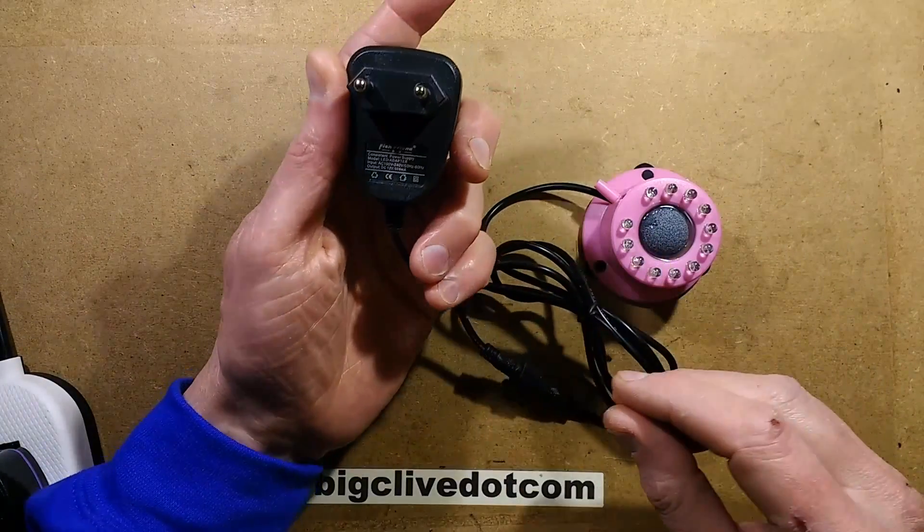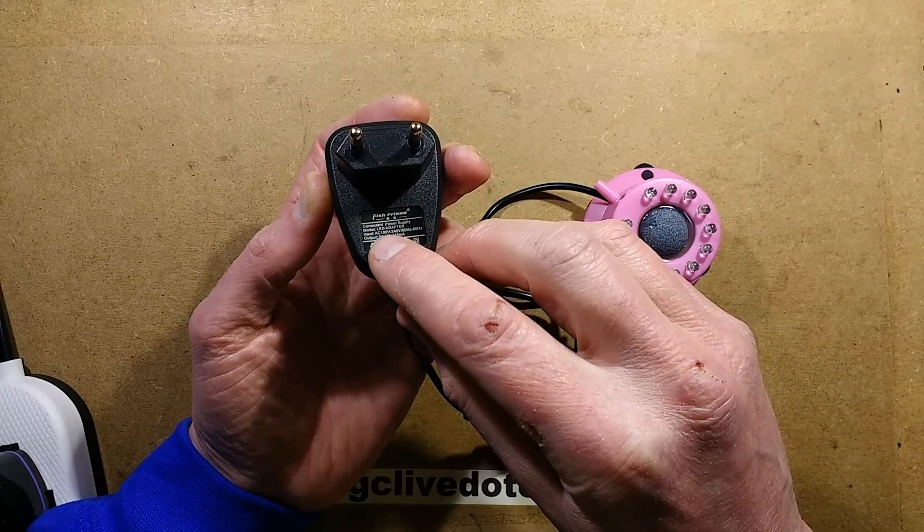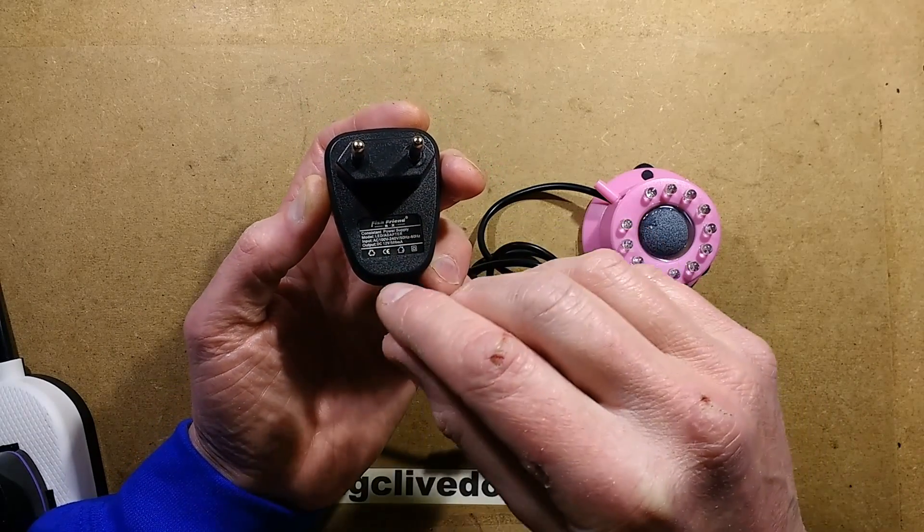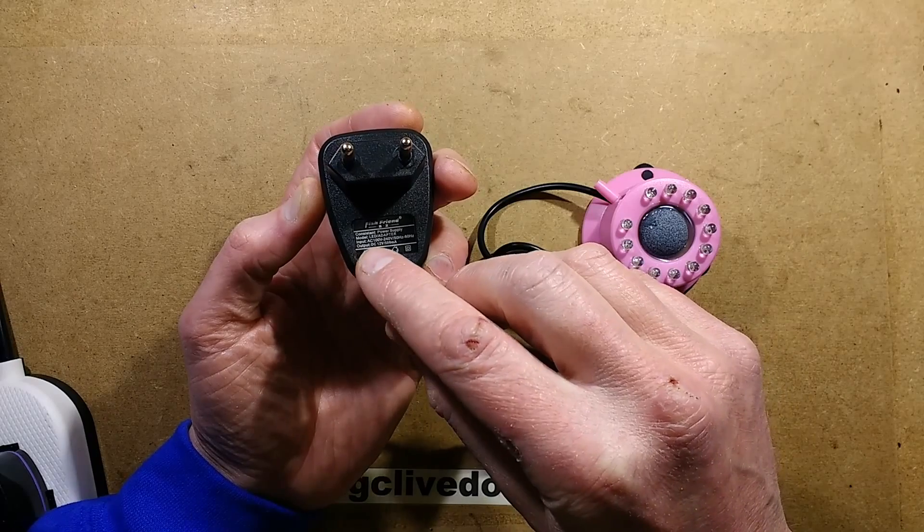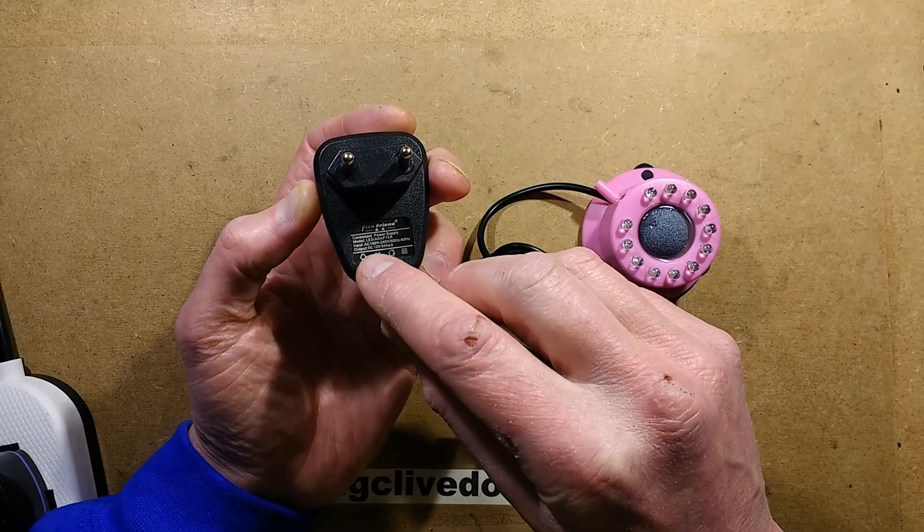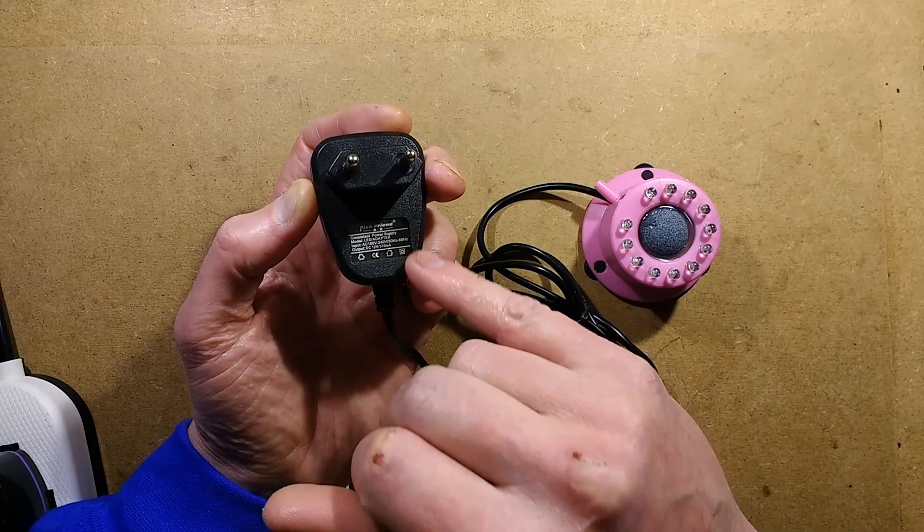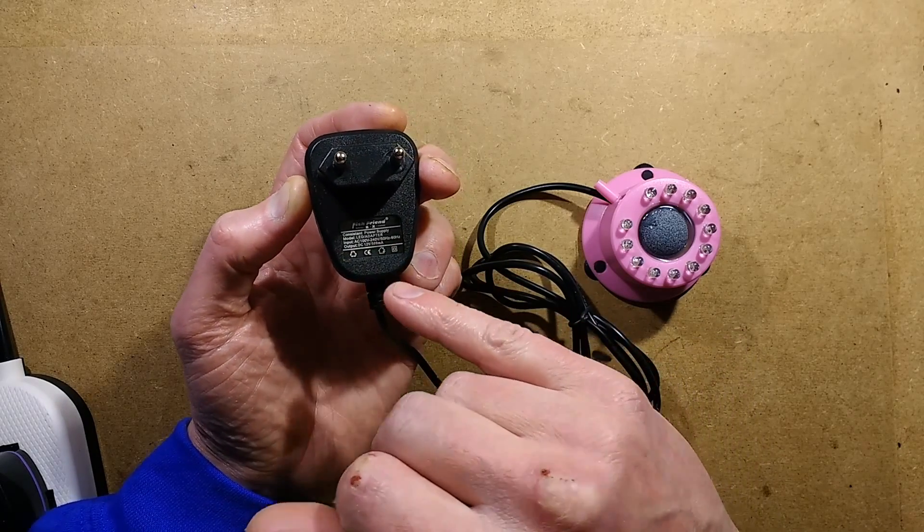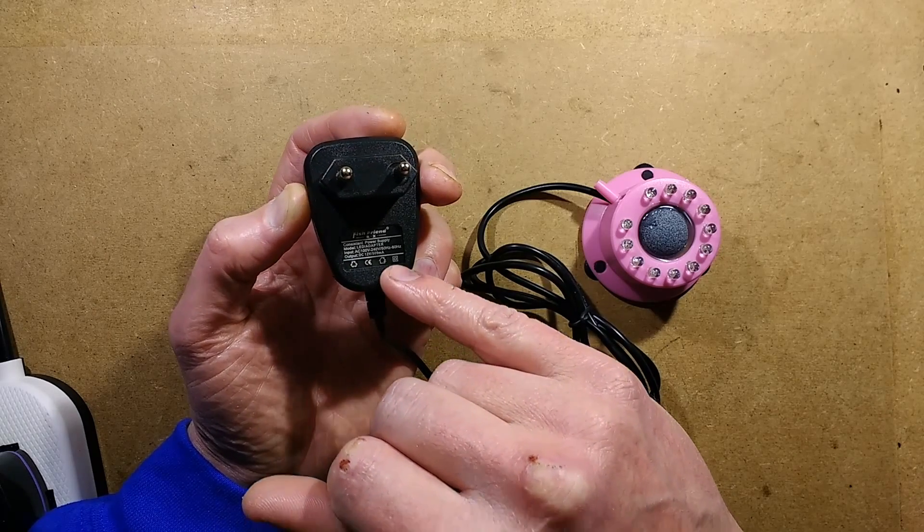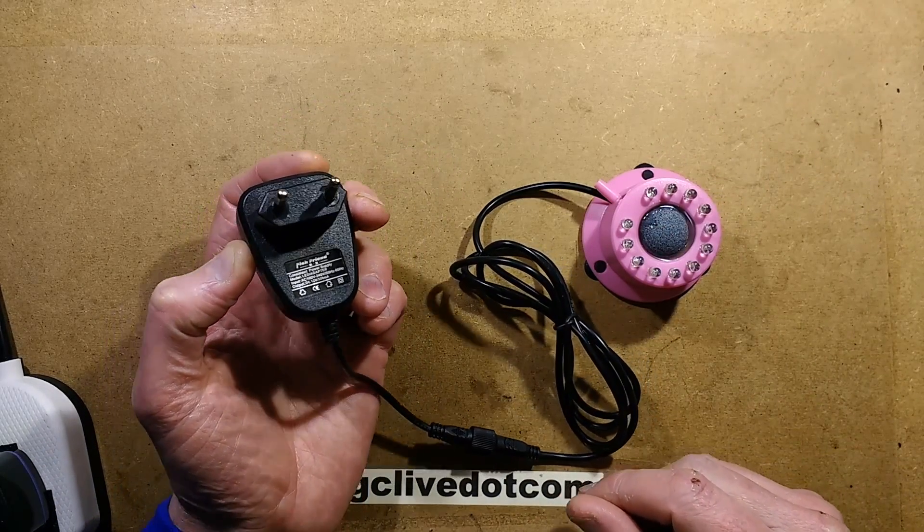It comes with this little power supply and it says Fish Friend Constant Power Supply, misspelled. Input AC 100 to 240 volts, 50 to 60 hertz, output DC 12 volts 500 milliamps, CE double insulated. And recyclable and the wee home, whatever that means, it's like the invasion of your house type logo.